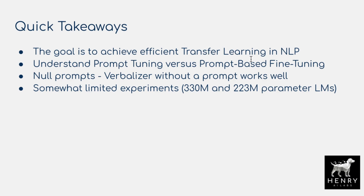That's distinct from prompt-based fine-tuning. Prompt-based fine-tuning, like in pattern exploiting training, is where you use the prompt to facilitate downstream fine-tuning. Particularly important is the verbalizer — how you map from the high-cardinality output of the language model (predicting between 30,000 to 55,000 tokens) down into candidate class labels.